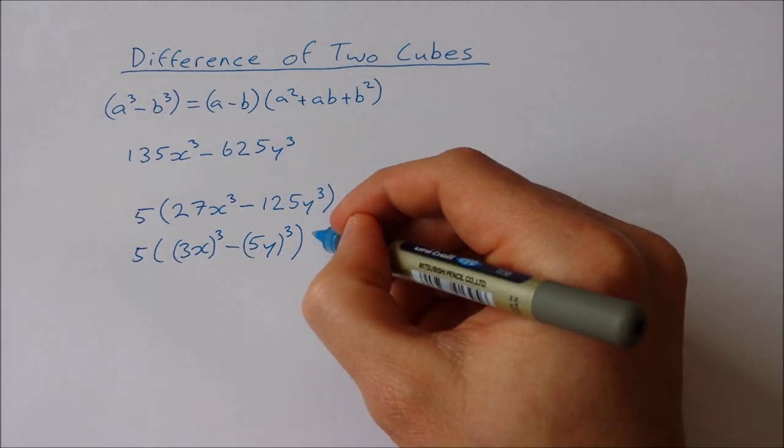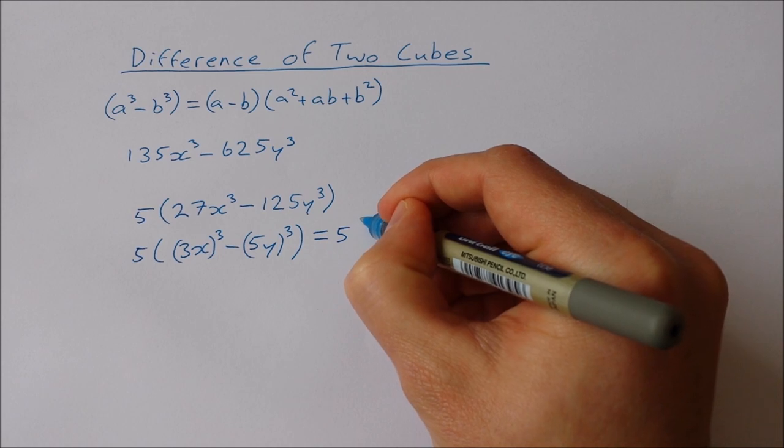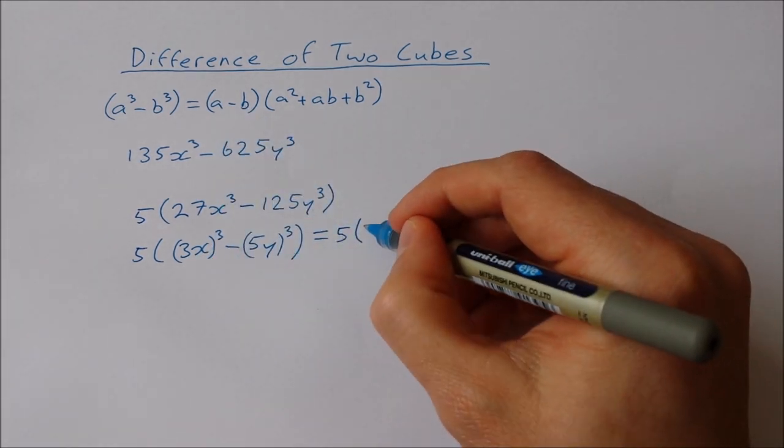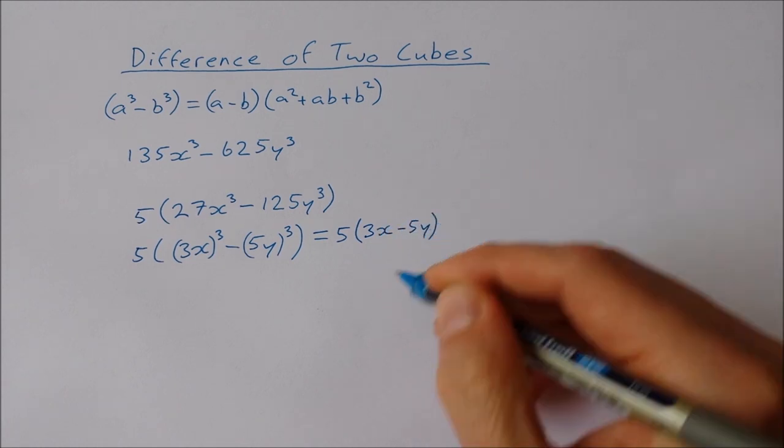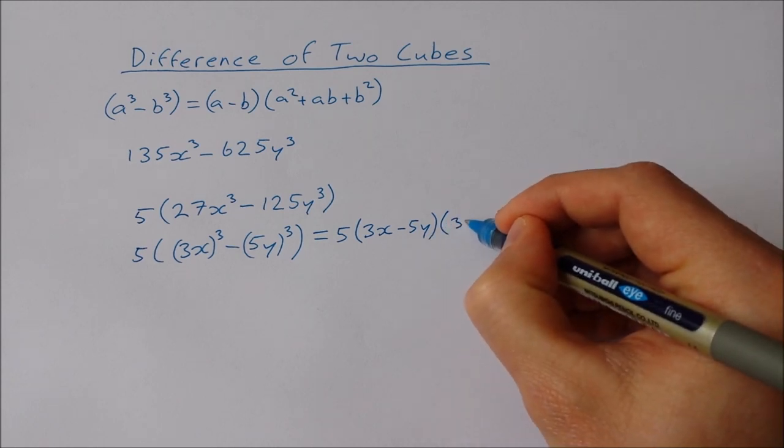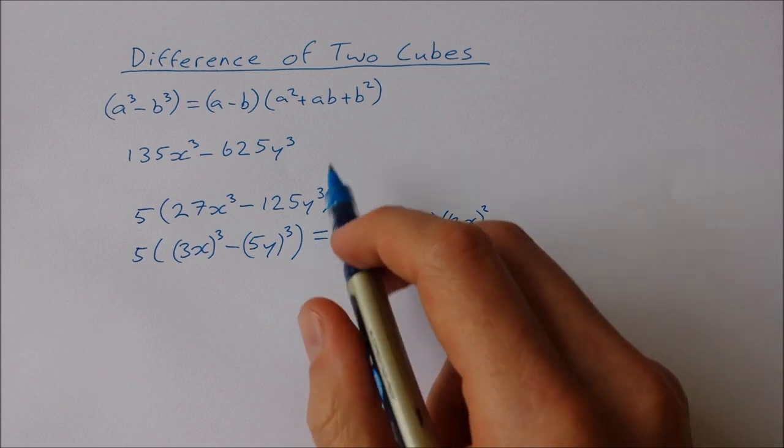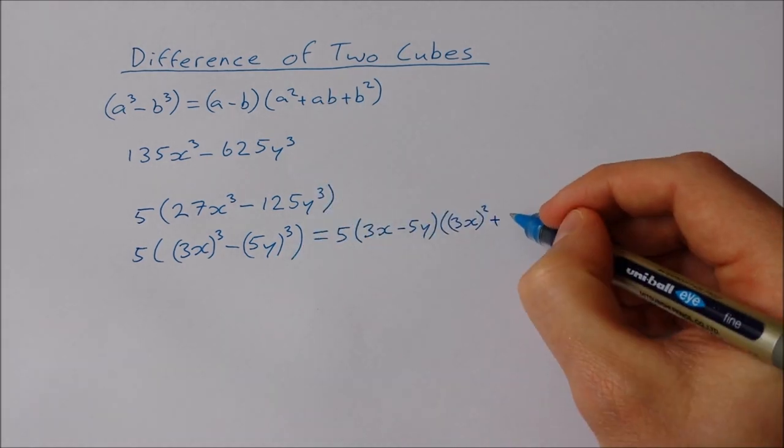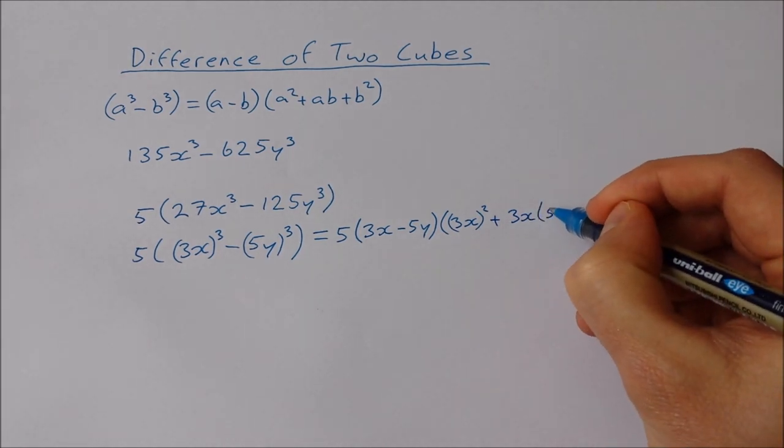So I'll have 5 times, it's going to be the first minus the second so that's 3x-5y, it's going to be the first squared so that's 3x², plus the first times the second so plus 3x times 5y, and plus the second squared so plus 5y².